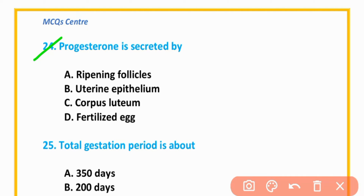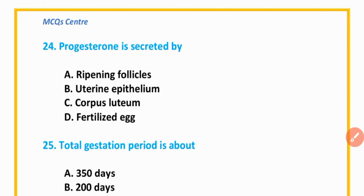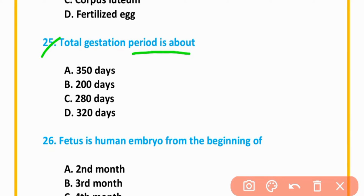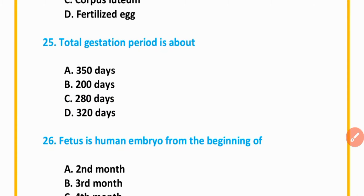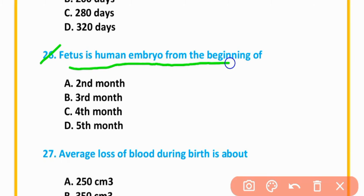MCQ number 24: Progesterone is secreted by the corpus luteum. Option C is correct. MCQ number 25: Total gestation period is about 280 days. Option C is correct.